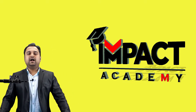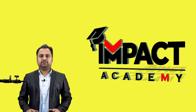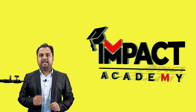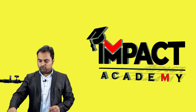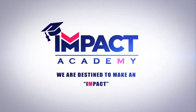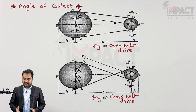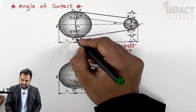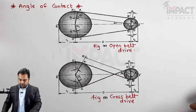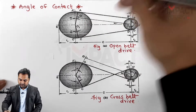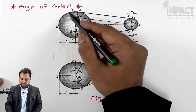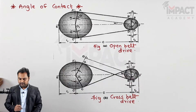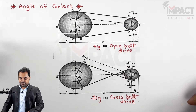In this video, I will be explaining the concept of angle of contact, also called the angle of embrace, for both pulleys — first for an open belt drive, then for a cross belt drive. The angle of contact is the angle up to which the belt is in contact with the pulley. The belt is not in contact over the full 360 degrees of a pulley.